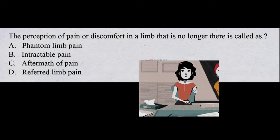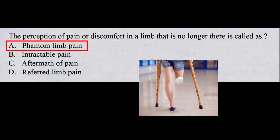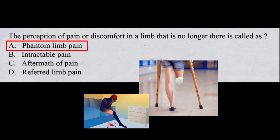The perception of pain or discomfort in a limb that is no longer there is called: A. phantom limb pain, B. intractable pain, C. aftermath of pain, D. referred limb pain. The correct answer is A, phantom limb pain. After an amputation, some people experience pain in the part of the limb that's no longer there. The pain is real; the phantom part refers to the location of the pain — the missing limb or part of the limb such as fingers or toes.